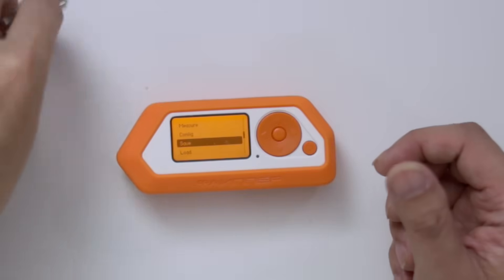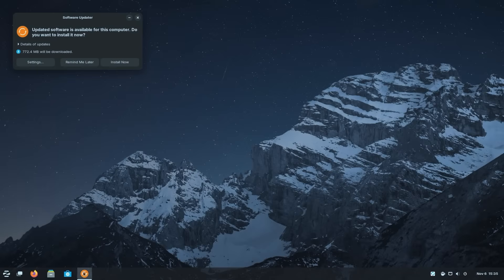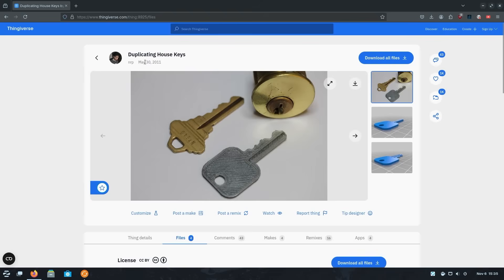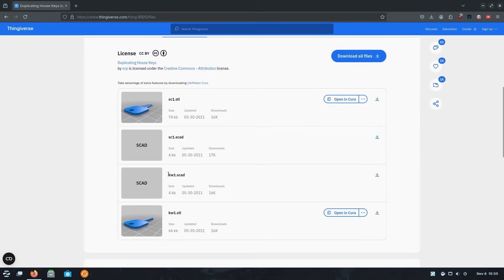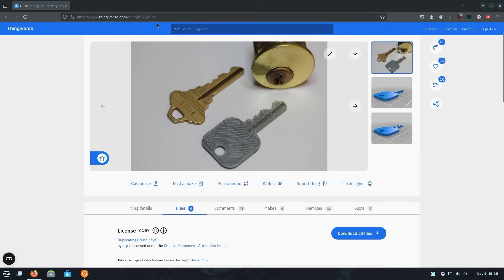or if you have a 3D printer, you can head over to Thingiverse, which I'll leave a link down in the description below for that. There's this thing called duplicating house keys, and it actually gives you the KW1 or SC1 or whatever it is, and it has the actual SCAD file.